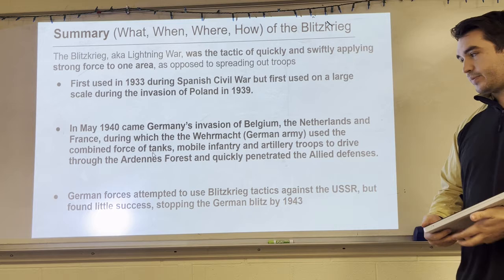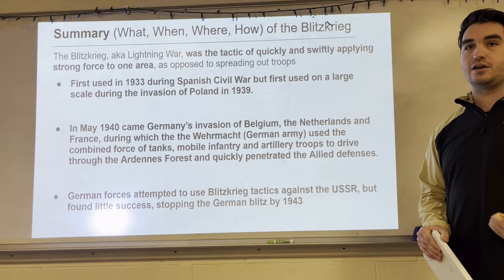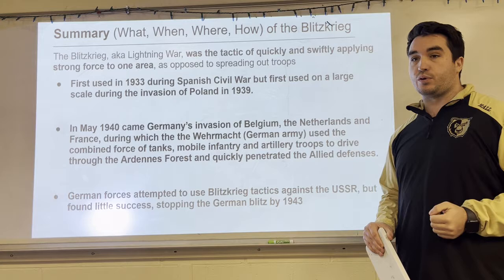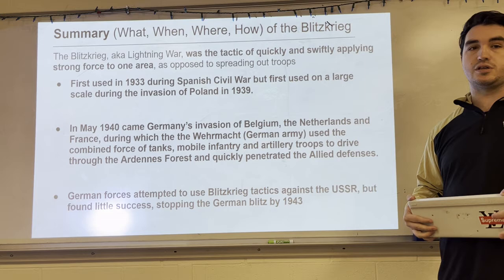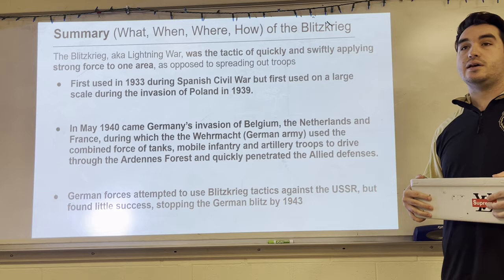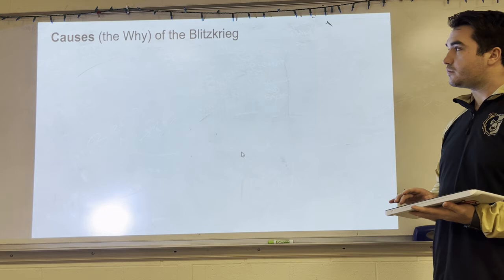Also, German forces attempted to use blitzkrieg tactics against the USSR — the Soviet Union, Russia — but it didn't work. The Germans didn't find much success there and were actually stopped and stalemated. The German blitz ends by 1943, so approximately from 1939 with the invasion of Poland to 1943 when it fails in Russia. That failure causes Germany to be fighting a defensive war for the rest of the conflict.